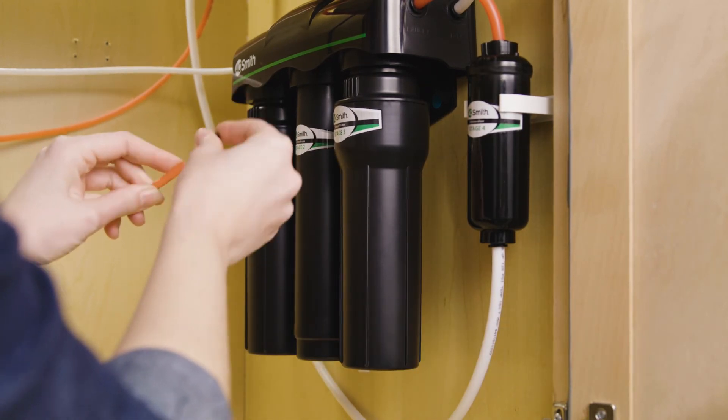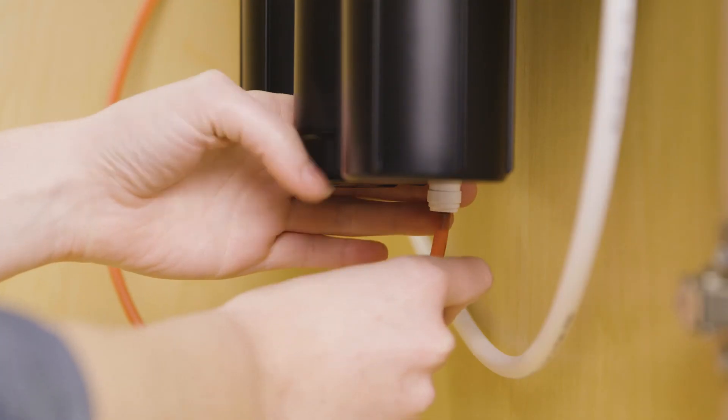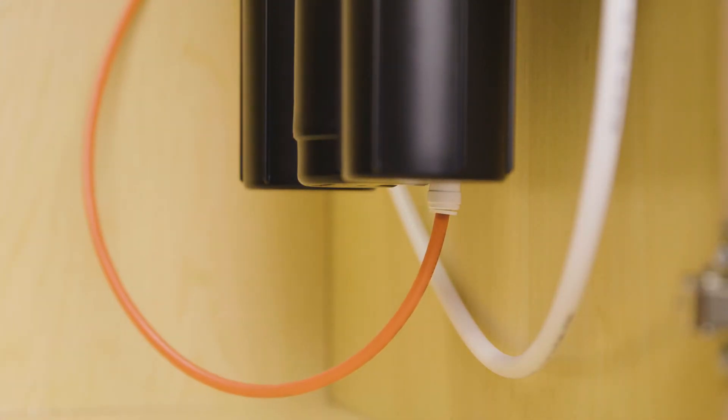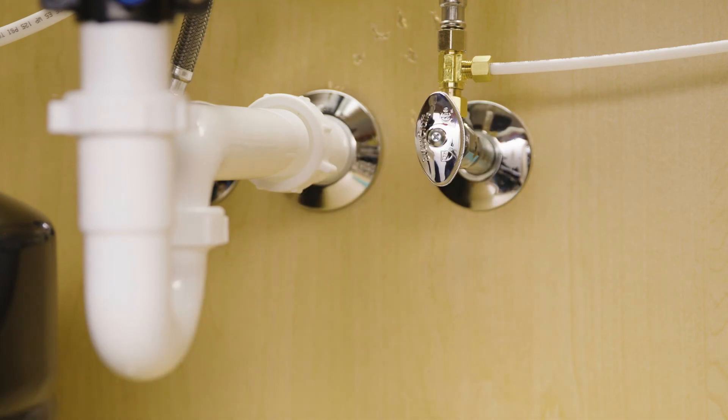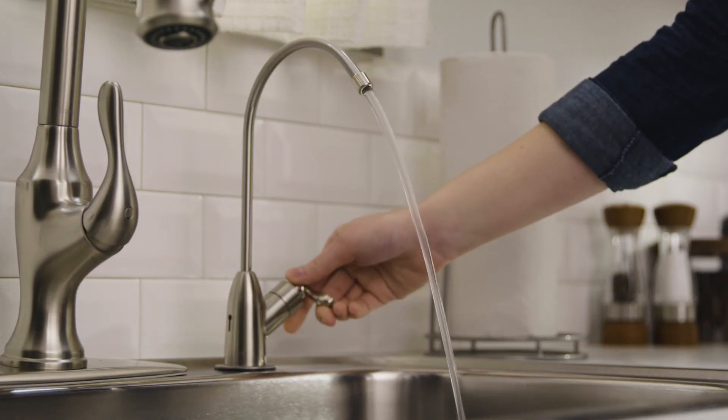Insert the new flow restrictor into the red tubing and push the tubing into the drain port elbow. Turn on the cold water valve and purge the system by letting water flow through the dedicated faucet for 24 hours.